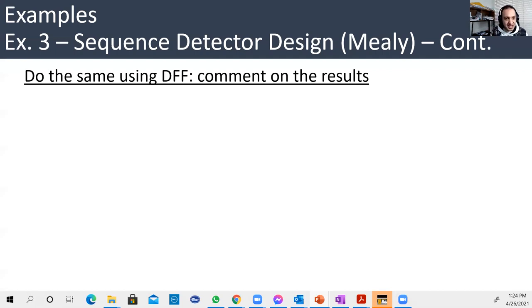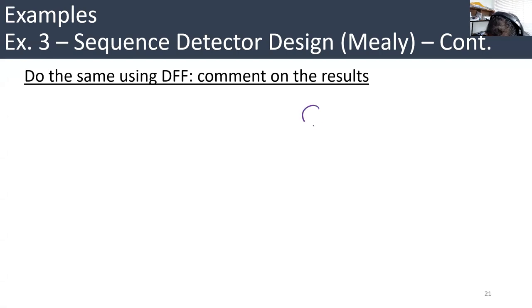So again, we have a Mealy circuit, sequence detector, two or more ones in a series or in a sequence, but now using the D flip-flop. Now the question is, does that really change the state diagram? Of course not. The state diagram is just an abstract idea. You get your idea out of your head and put it in a piece of paper. So the number of states, the transition between states, all that are the same. So we're going to have the same state diagram.